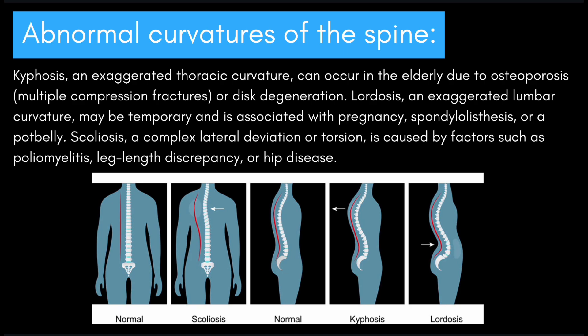Next, we have abnormal curvatures of the spine. Kyphosis, an exaggerated thoracic curvature, can occur in the elderly due to osteoporosis, multiple compression fractures, or disc degeneration. Lordosis, an exaggerated lumbar curvature, may be temporary and is associated with pregnancy, spondylolisthesis, or a pot belly. Scoliosis, a complex lateral deviation or torsion, is caused by factors such as poliomyelitis, leg length discrepancy, or hip disease.